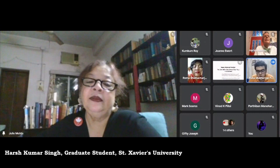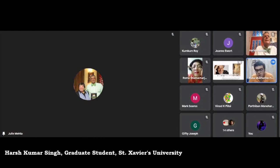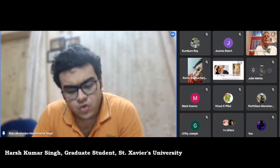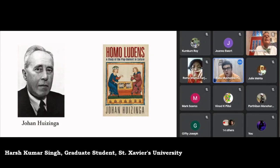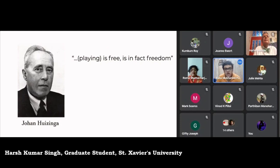Perusing through Ondaatje's novel Divisadero, one is drawn towards the card games that Cooper plays. Looking at Cooper's life, his fascination and inclination towards card games and the various technicalities he considered brings into play the various ways in which playing was assessed by Johan Huizinga in his Homo Ludens — roughly translated as 'man the player.' Huizinga says that the play element in culture presupposes human society, for even animals play among themselves, leading to his first characteristic of play: that playing is free and is in fact freedom.